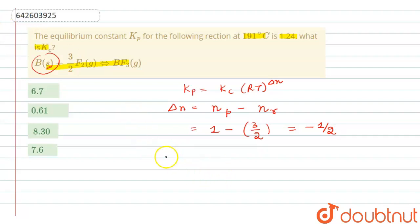So Kp is given to us as 1.24, equals Kc RT to the power delta n. Delta n is minus half, so it will be 1.24 equals Kc times the value of R, which is 0.0821.